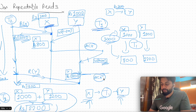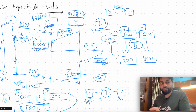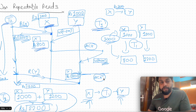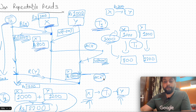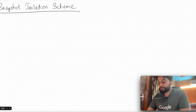This problem is called non-repeatable reads. It's called that because if transaction T2 performs the audit again later, the problem resolves itself automatically — it would get X as 800 and Y as 1200, summing to 2000. The error only happened once, at the exact window when T1 was in progress. It's not possible to reliably reproduce this error, which is why it's called non-repeatable reads. We'll now solve this with the snapshot isolation scheme.